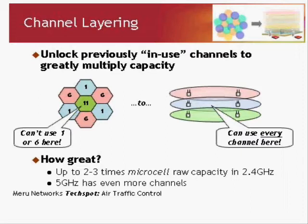The question then is: how greatly can you multiply this capacity? For 2.4 GHz, you can go somewhere between two and three times the raw capacity of Microcell, and when you factor in many of the additional things we do on top of it, you could get even higher depending on your application. 5 GHz is interesting because it has even more channels, so when you add more channels to the mix, you have more channels you can layer, and the capacity just scales up linearly.